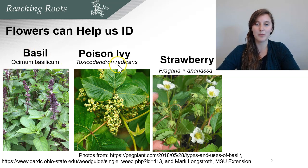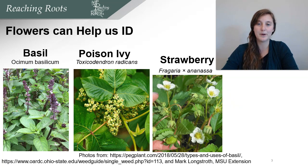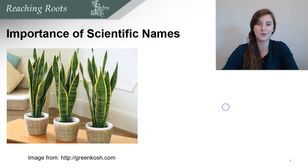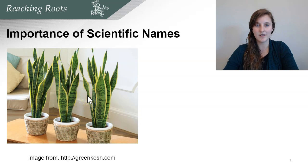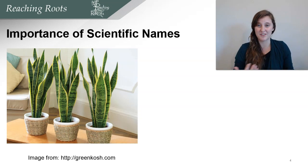You'll notice that each of these plants has a common name that you're probably pretty familiar with — basil, poison ivy, and strawberry. Underneath you'll see a scientific name, which is the binomial name of a plant, which might be a little less familiar. Scientific names are really important because common names can be different depending on who you're talking to. For example, this common house plant has many different common names — it's sometimes called snake plant, and other times it's called mother-in-law's tongue. This can get really confusing if you're talking to somebody about the same plant — you may be talking about the same plant with just different names.